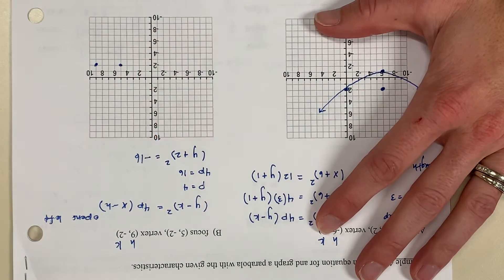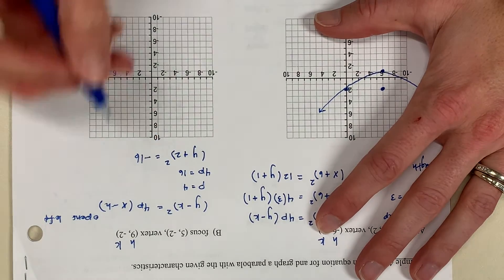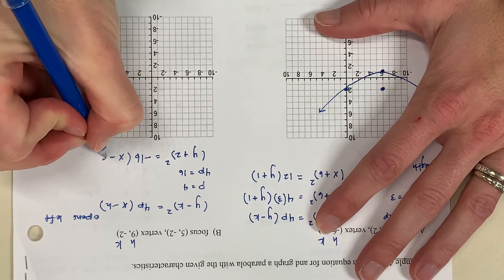And since the parabola opens to the left, 4p has to be negative. So that's negative 16. Then we have x minus 9.